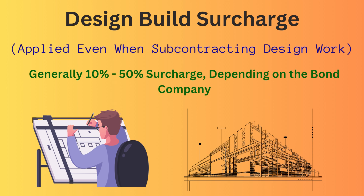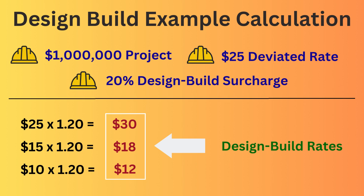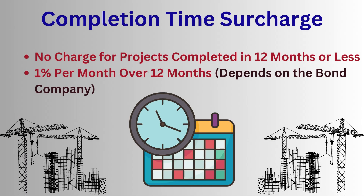Other factors can impact performance and payment bond costs. One of those is design-build projects. Design-build projects carry more risk to contractors and bond companies, even when those risks are subcontracted to a licensed design professional. Bond companies charge more for these risks by surcharging the contractor's normal rate. Depending on the bond company, these surcharges can range from 10% to 50% of the normal bond cost. For example, with a 20% surcharge on a $25 class B deviated rate, the rate becomes $30 (3%) for the first $100,000, $18 (1.8%) for the next $400,000, and $12 (1.2%) for the next $400,000 — you simply multiply the existing bond rate by 1.2 or whatever the surcharge factor is.